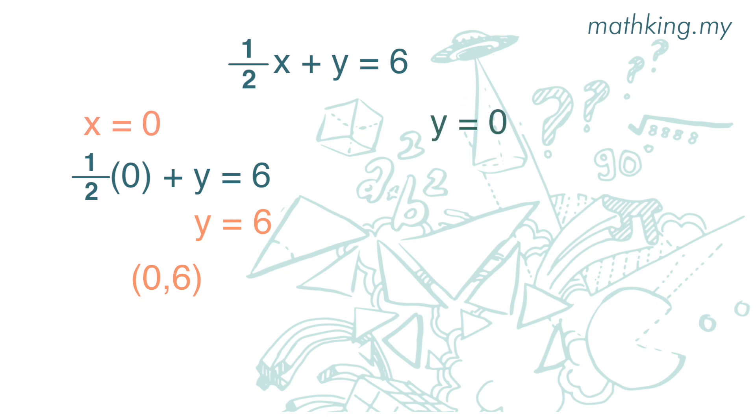When y is 0, we plug in the number 0. So we get 1 over 2 x plus 0 is 6. x is equal to 6 times 2 and x is 12. The answer is y is 0, x is 12. So we get the coordinate 12, 0.